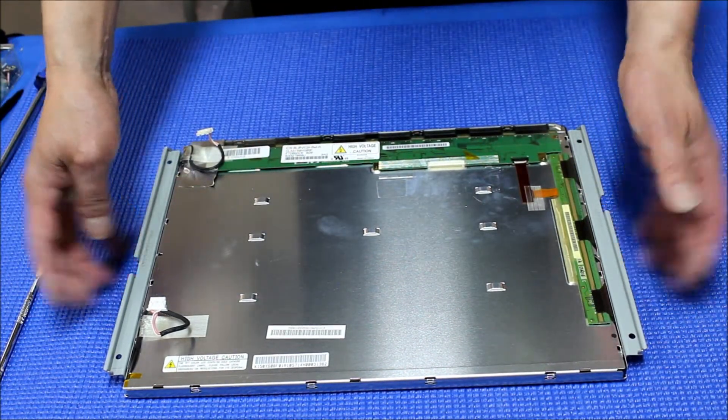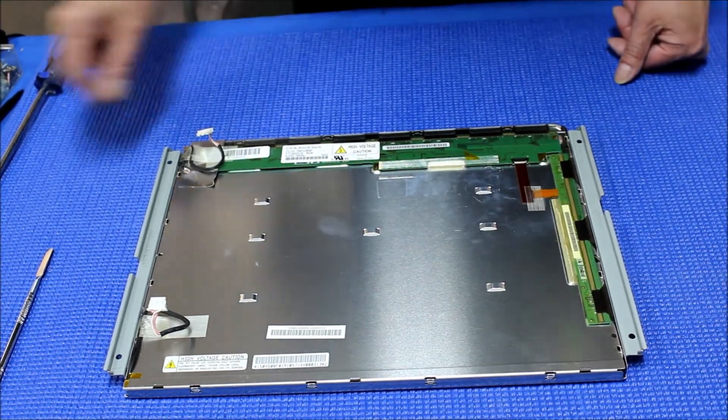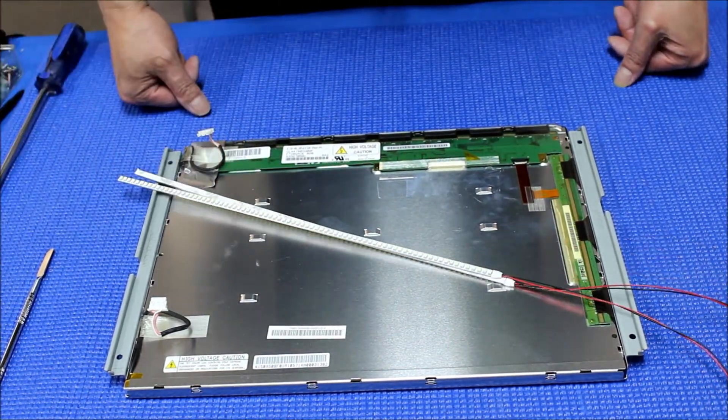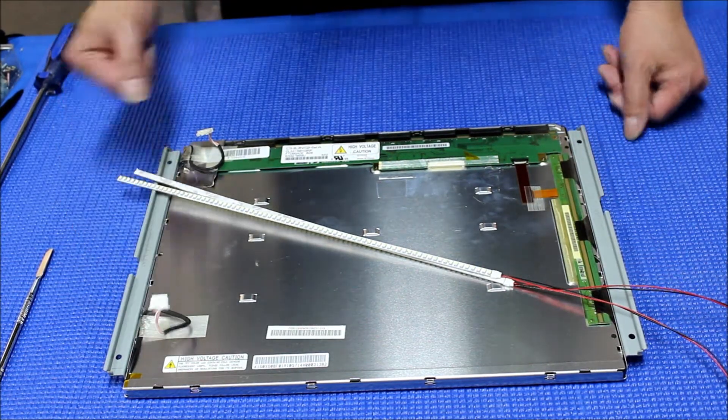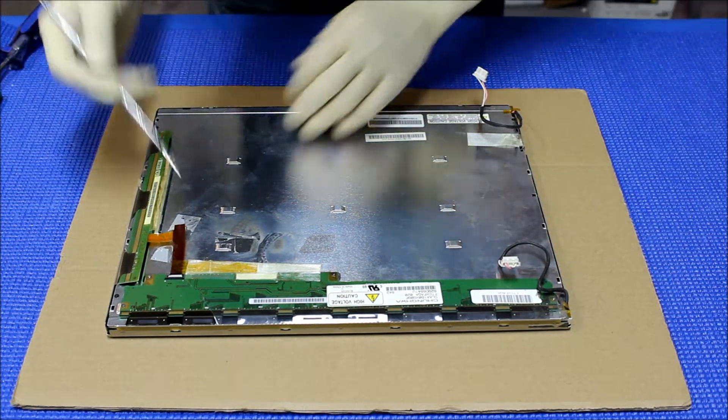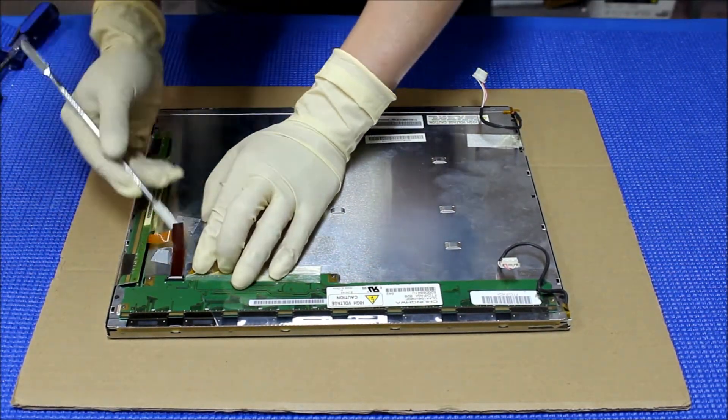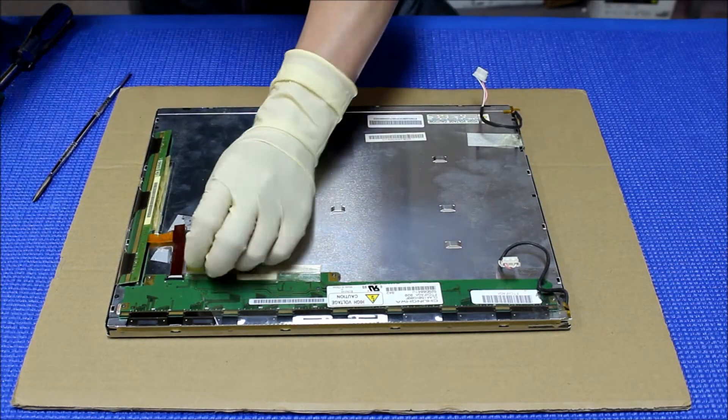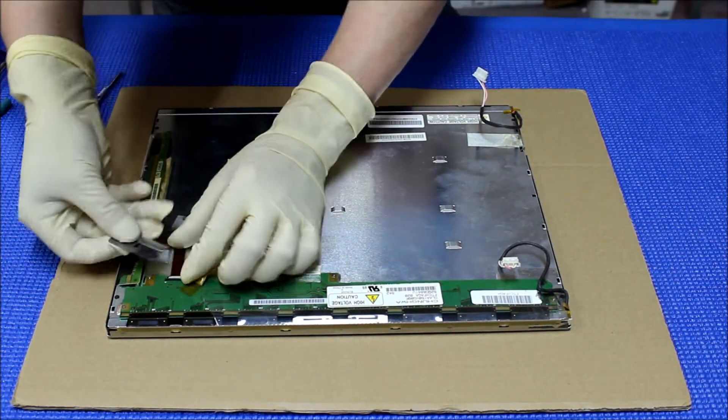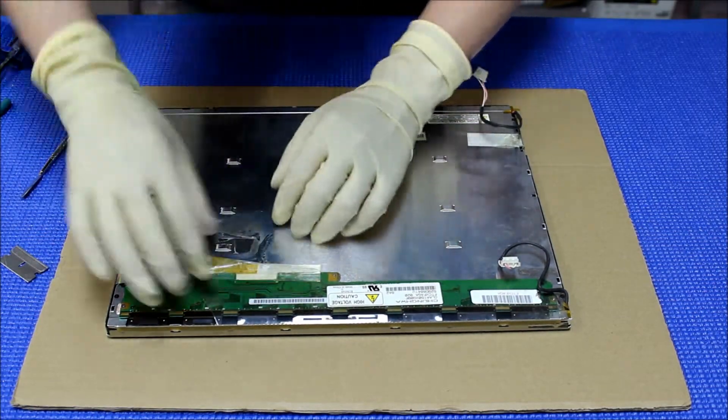This needs to be removed. After we remove the bracket, then we can replace and upgrade this LED backlight from the CCFL. We're going to show you in the next steps. Remove this tape. Just click the plastic clip. Remove the ribbon cable. Just flip up the plastic, see that? Take it out, separate.